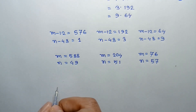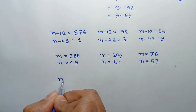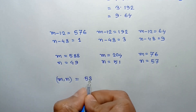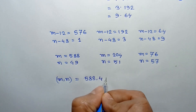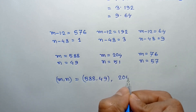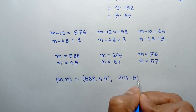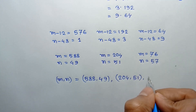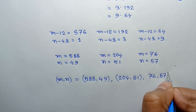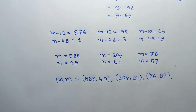So the solutions are: when m is 588, then n is 49; when m is 204, then n is 51; and when m is 76, then n is 57. These are the three integer solutions of this equation. If you like this video, please subscribe to my channel. Thanks for watching.